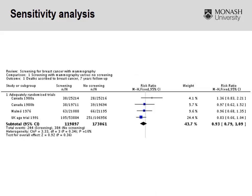Looking at just the first group of studies in this sensitivity analysis — the good quality, adequately randomized studies — we can identify that the pooled result seems to indicate no real benefit or harm in terms of screening with mammography for reducing the rate of mortality. There seems to be a trend towards a reduction in harm, potentially a 7% decrease in the rate of mortality. But because the confidence intervals include one, it is not statistically significant.